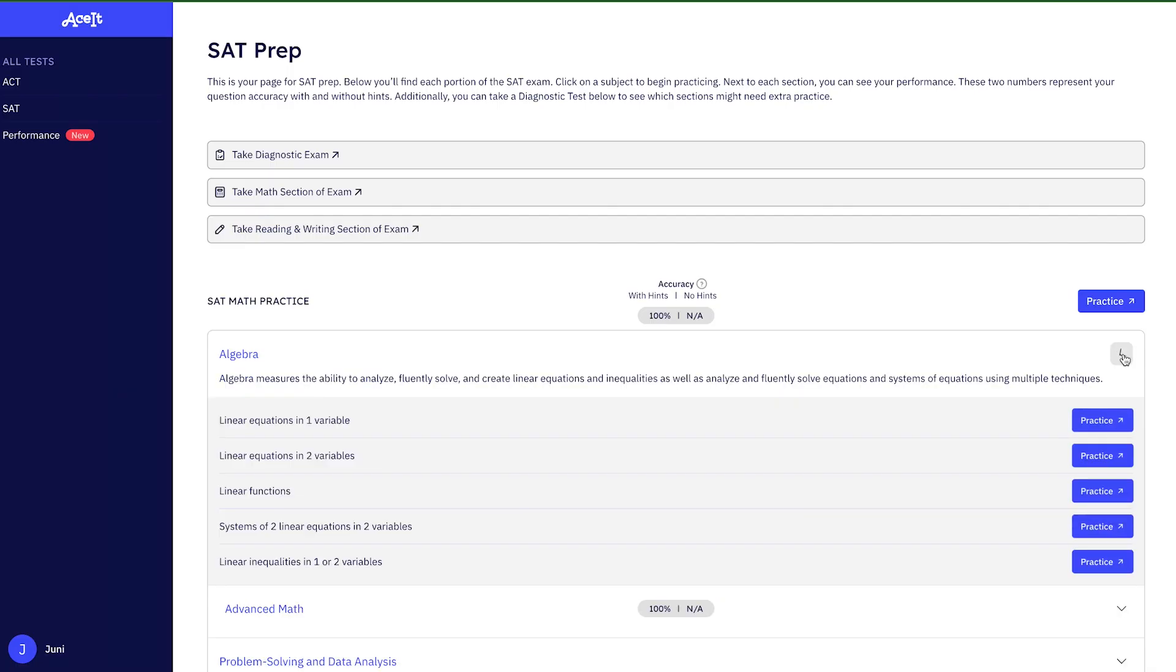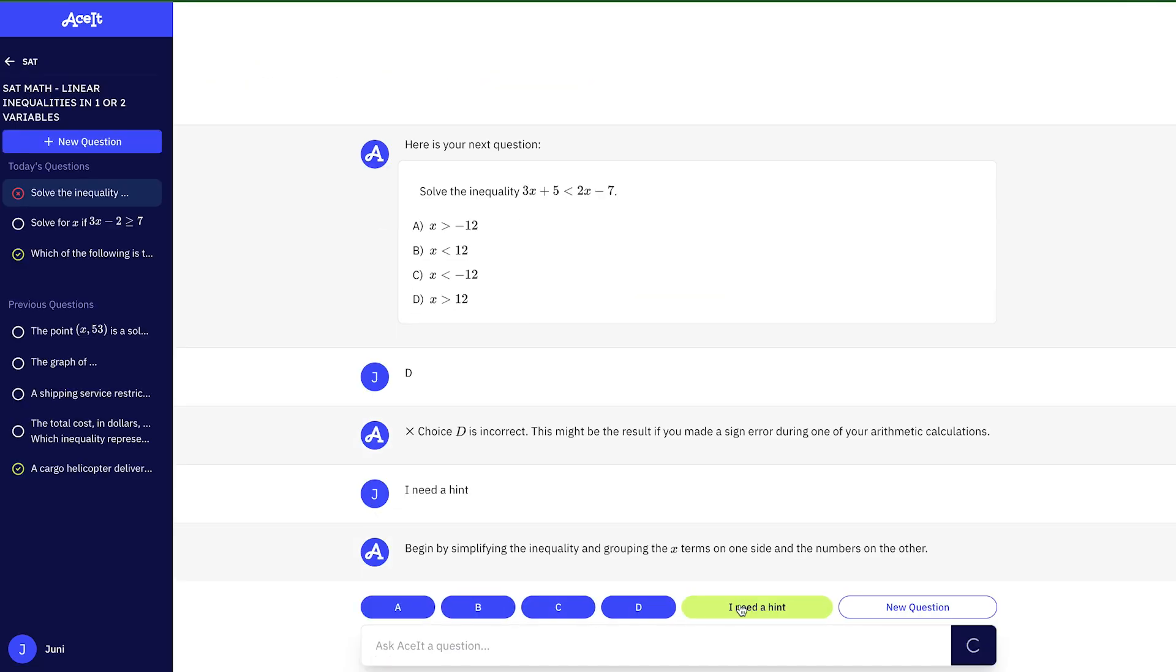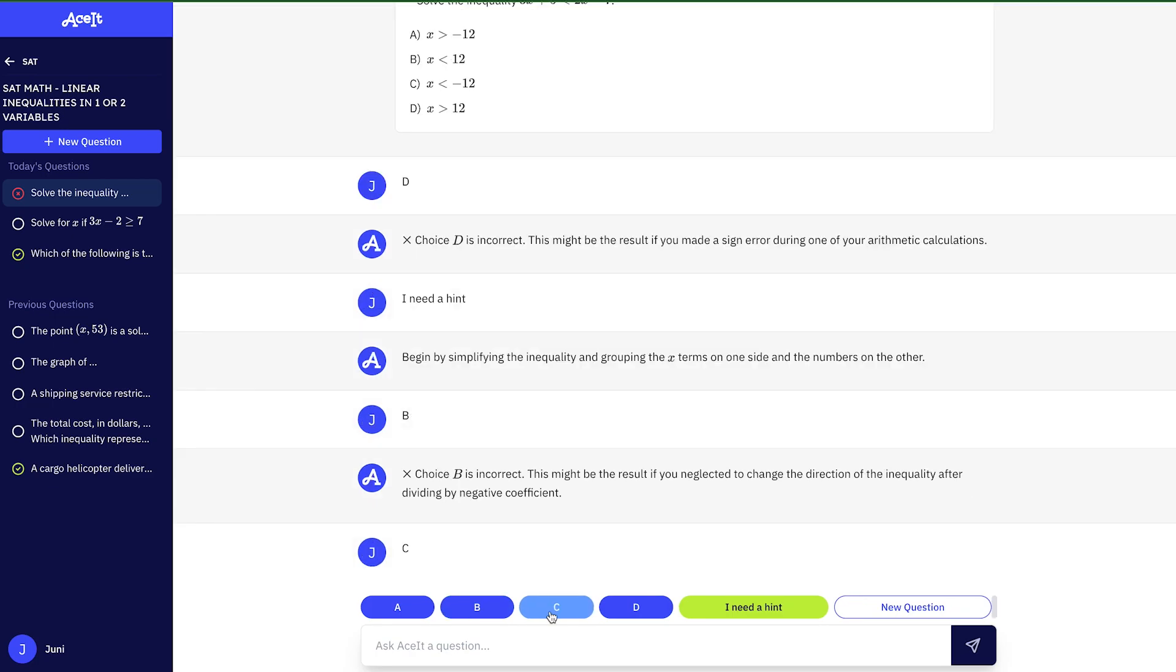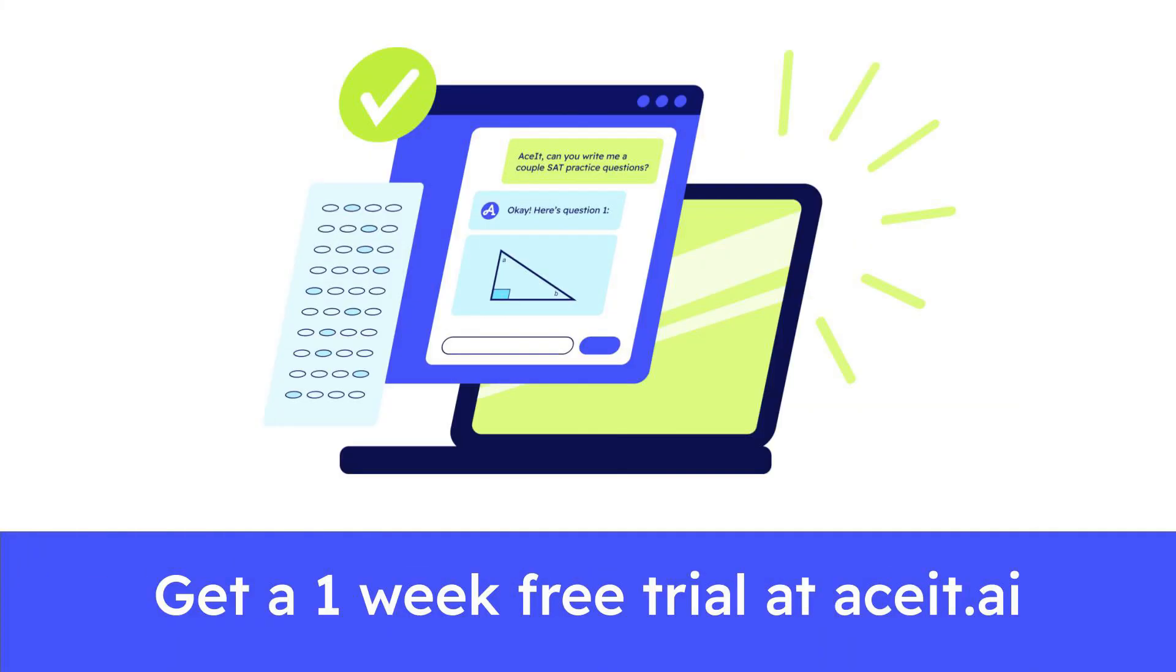ACET is the ultimate study tool for the SATs and ACTs created by Junior Learning, an award-winning educational tech company that has helped thousands of students take their learning to the next level. Get a one-week free trial when you use the link in the description. Until next time, bye!